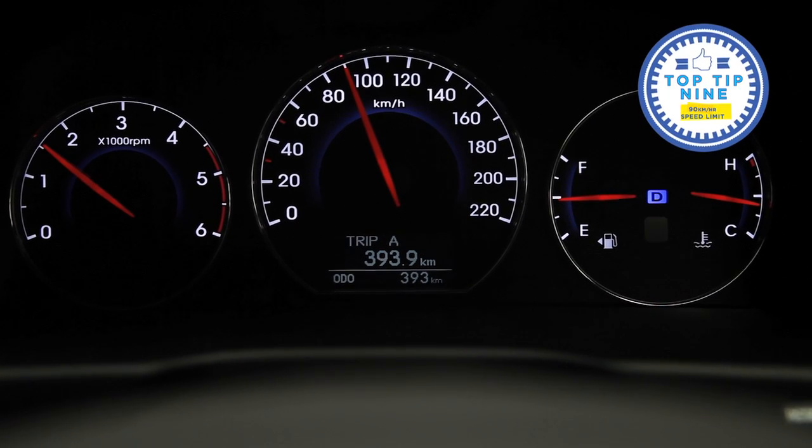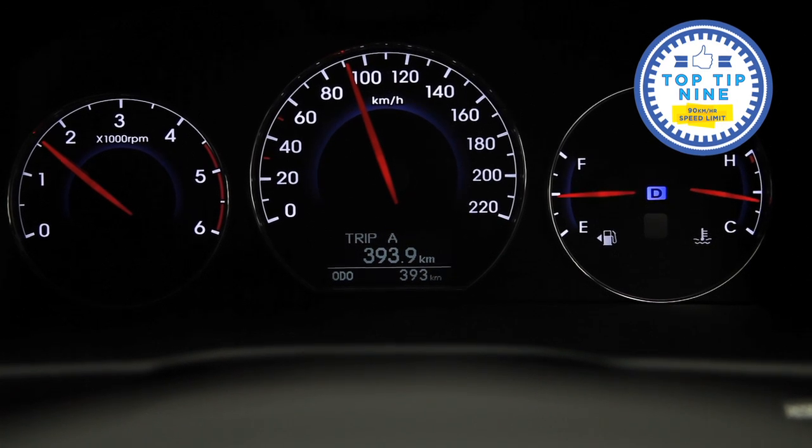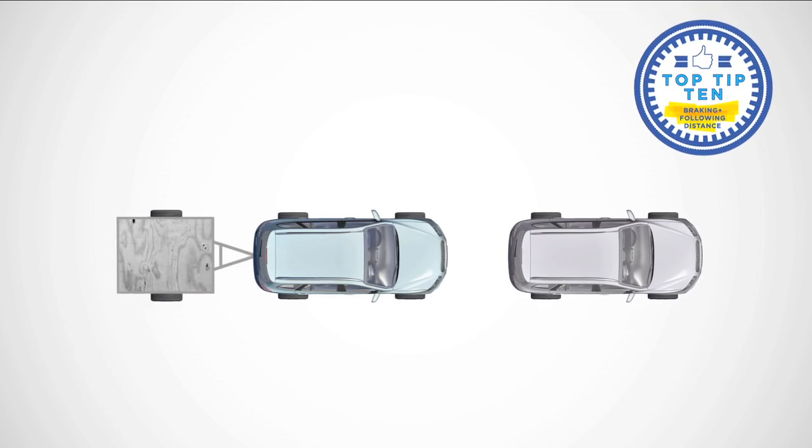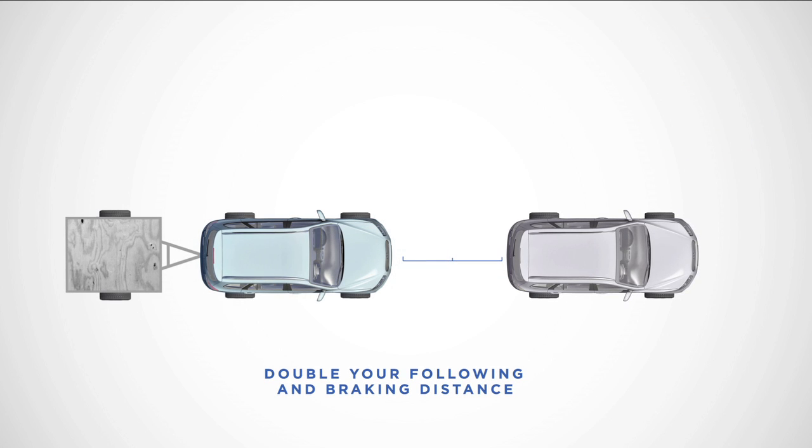Slow down. The speed limit with a trailer is 90 K and increase your following and braking distances. Rule of thumb is to double your following distance.